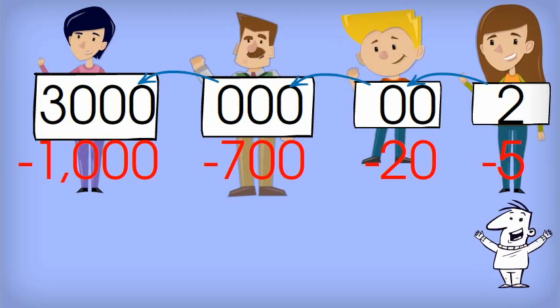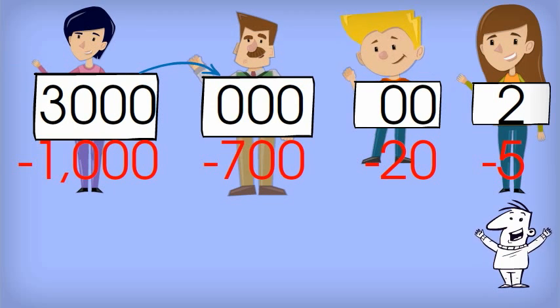Thelma only has $1,000 bills, so she lends $1,000 to Hector. Now Thelma has only $2,000, and Hector has $1,000.